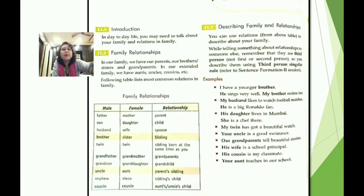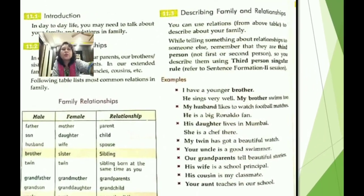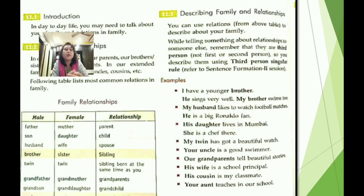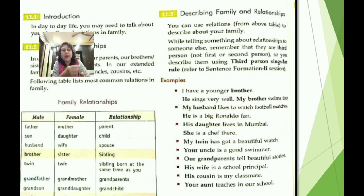When describing family and relationships, we can use the relations from the table. While telling someone about relationships, remember that we refer to family members as a third person — not 'I' or 'you,' but 'he,' 'she,' 'they.' We apply the third person singular rule from session 10. For example: 'I have a younger brother,' 'He sings very well,' 'My brother swims too.'